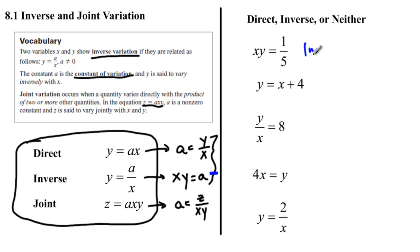So this is inverse variation. If I wanted to I could write it as y equals one over five x.